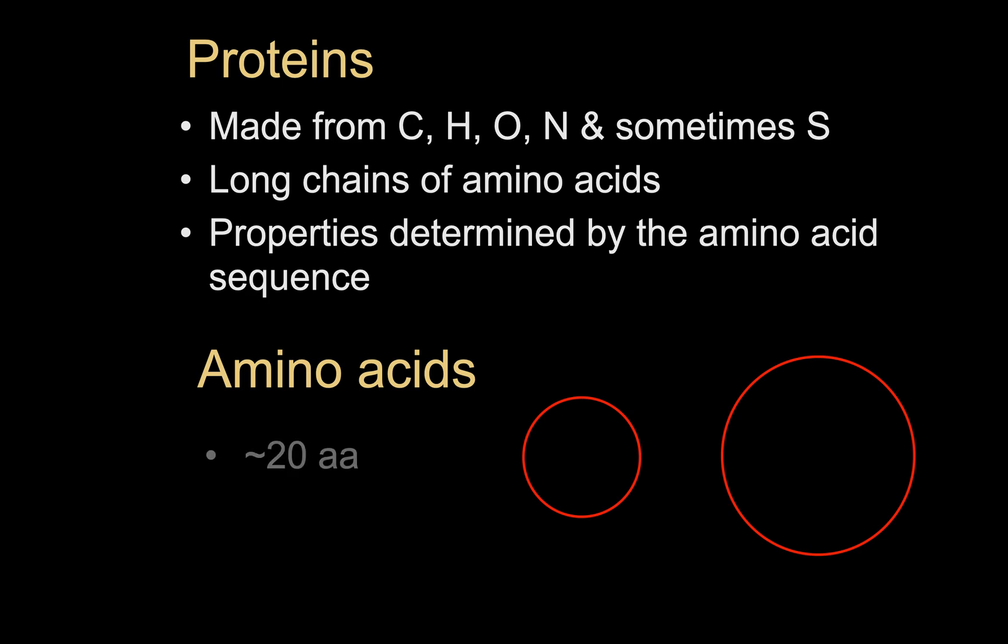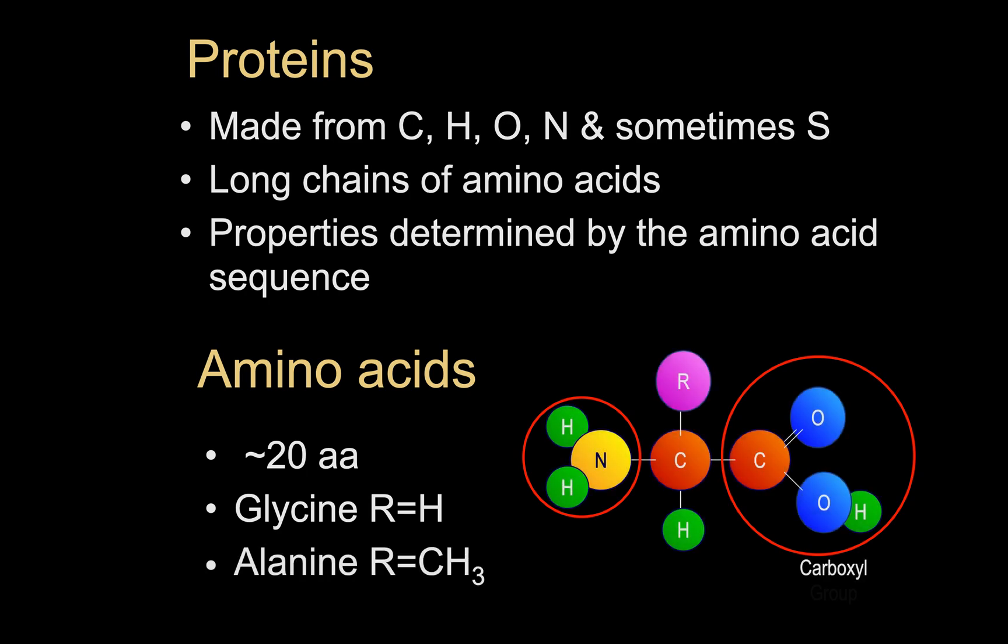Proteins are made up of carbon, hydrogen, oxygen, nitrogen and sometimes sulfur. They are long chains made up of amino acids and therefore the amino acid is considered to be the monomer. Dependent on the sequence of the amino acids, the proteins have a variety of different properties.